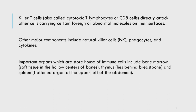Other major components of the immune system include natural killer cells, phagocytes, and cytokines. Important organs that serve as storehouses of immune cells are the bone marrow, where the majority of immune cells are concentrated in the soft tissue inside bones; the thymus, which lies behind the breastbone; and the spleen, a flattened organ at the upper left of the abdomen. These are the organs where immune cells are primarily concentrated in our body.